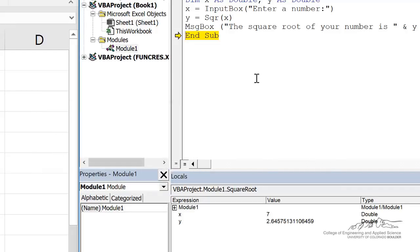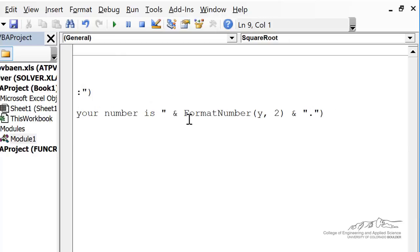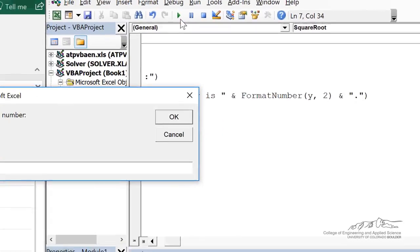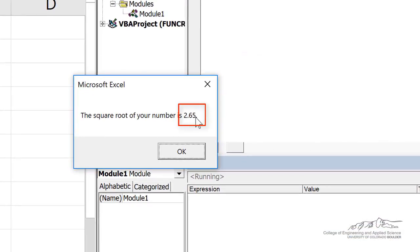Now you notice all the sig figs we had is a double, so we had 15 or 16 significant figures. We can change that by using the format number function. Now instead of just outputting Y, I put format number Y, 2, which will truncate it to the hundreds place. And when we run it, I put in 7, and it truncates it to the hundreds place.